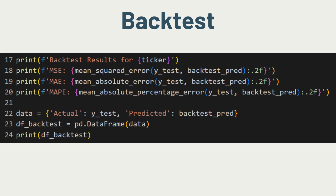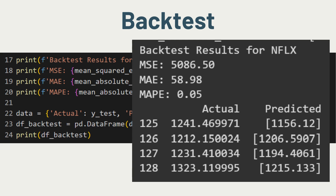We can print the metrics along with the predicted results to visualize them. From the metrics we can see that using these features the predictions are somewhat off and further improvement is necessary. Personally I would prefer the mean absolute percentage error to be below two percent, and ideally within one percent, but it depends on your risk tolerance and use case.